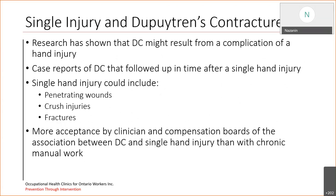Coming back to the risk factor of single hand injury, research has shown that Dupuytren's might result from a complication of hand injury. There are many case reports of Dupuytren's following a single hand injury, and the classification of a single hand injury could include penetrating wounds, crush injuries, and fractures. More acceptance exists by clinicians and compensation boards of the association between Dupuytren's and single hand injury than currently exists between chronic manual work and Dupuytren's Contracture.